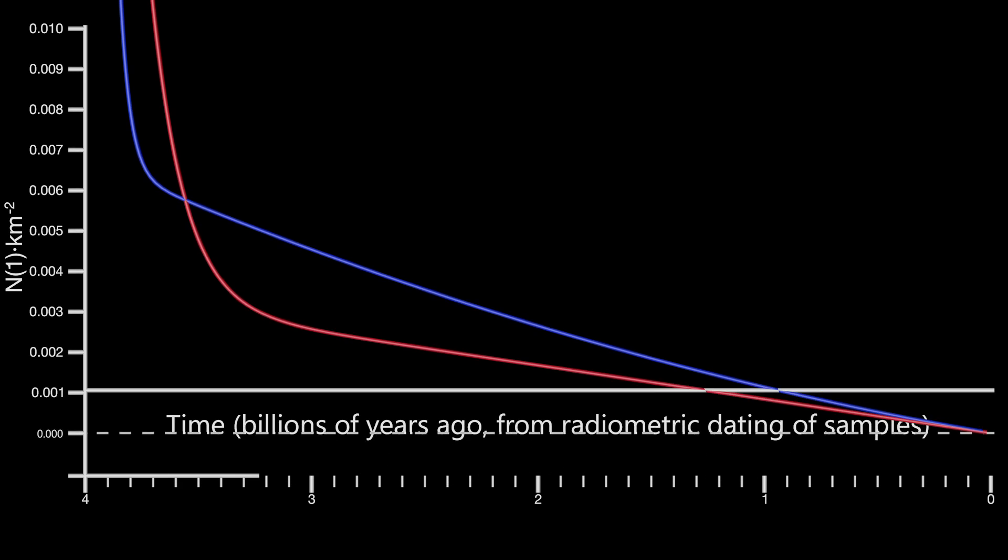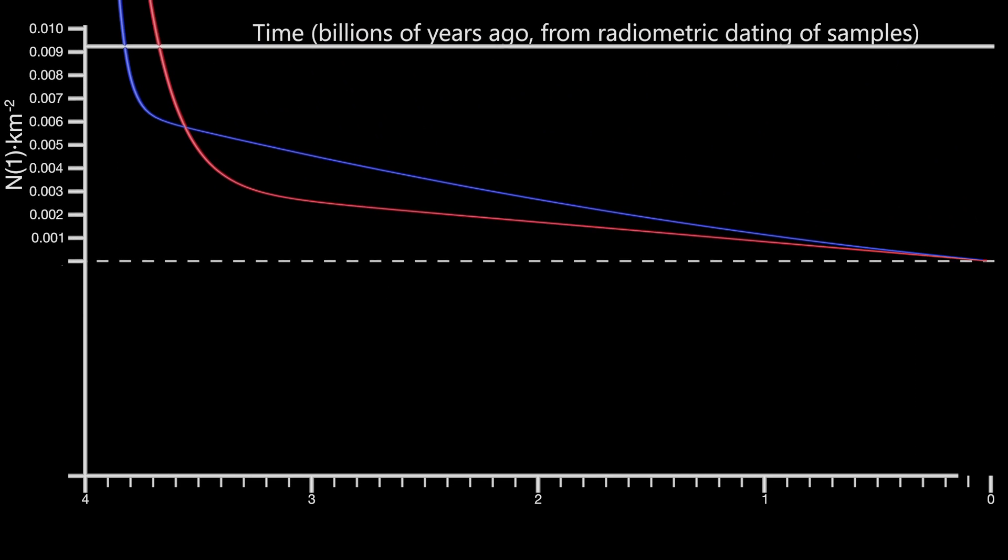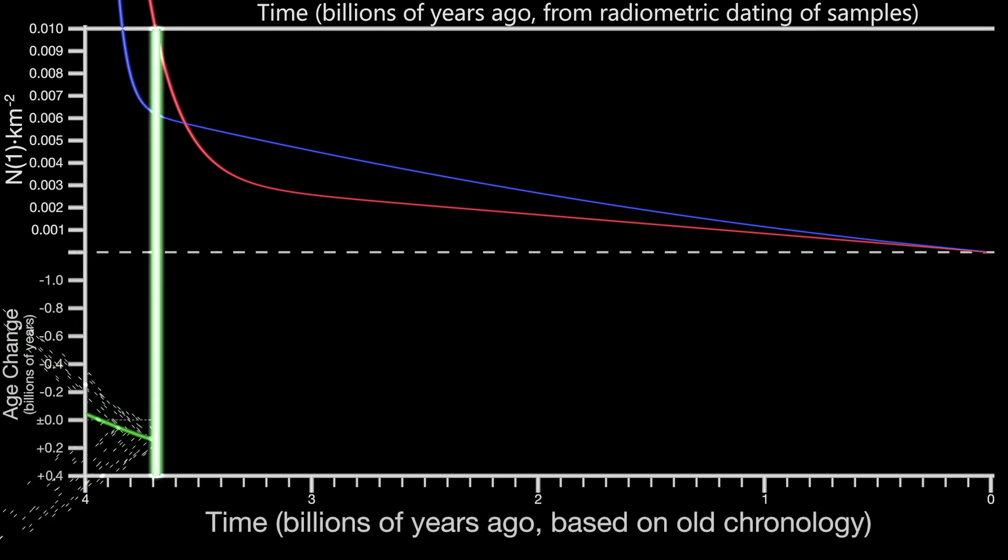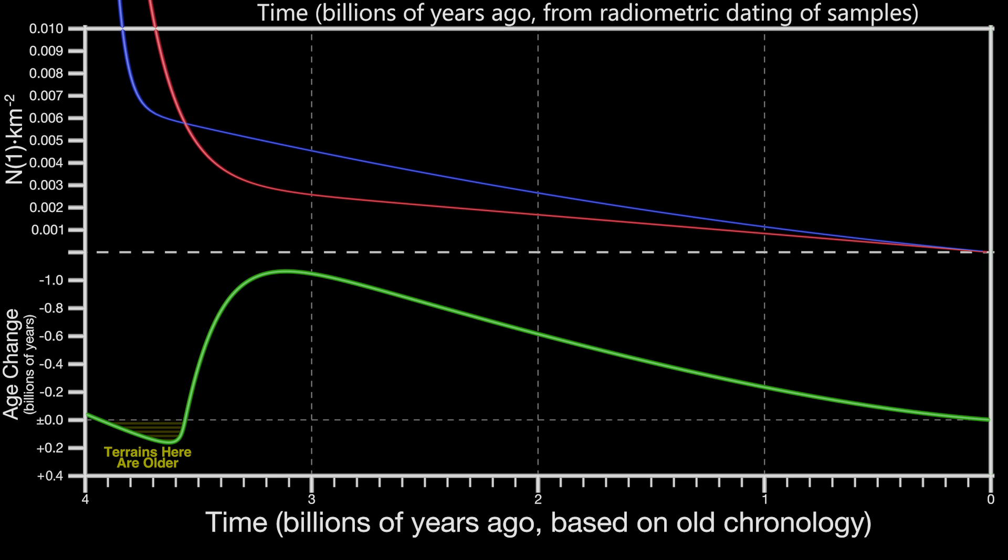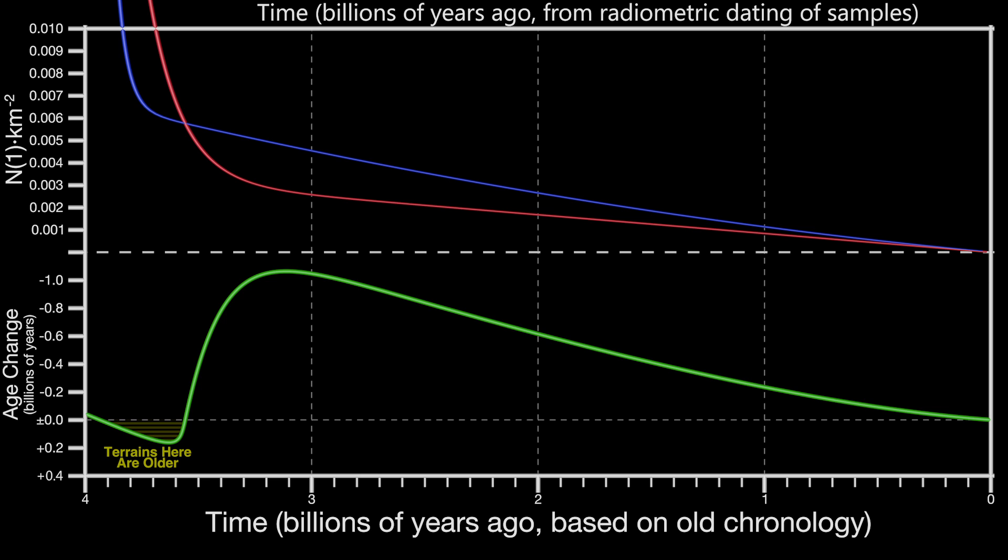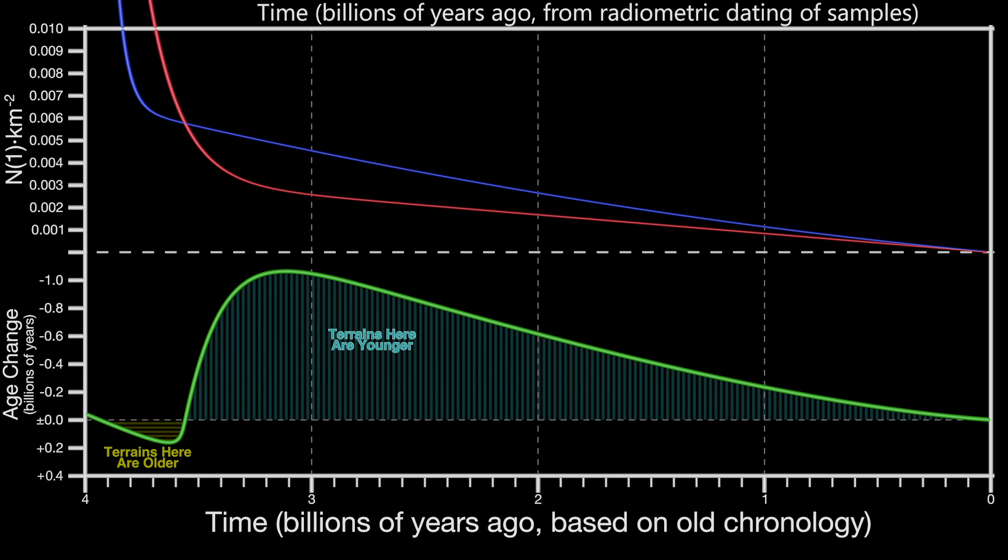We can look at what this means for modeled surface ages based on craters. One consequence of this revised chronology is that surfaces that had been dated to about 3.6 to 3.9 billion years old before are now up to about 200 million years older in my new chronology. Put another way, this means that it takes fewer craters to be that old. In the other direction, anything younger than about 3.5 billion years old from the other chronology is up to about 1 billion years younger, or that it takes more craters to be as old as we thought it did.